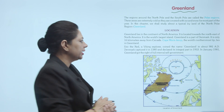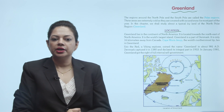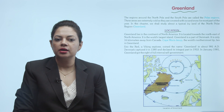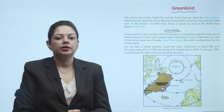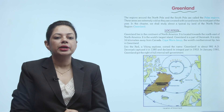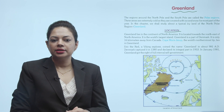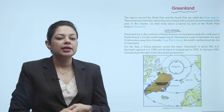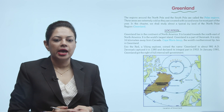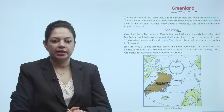What is the location of Greenland? Greenland lies in the continent of North America — it is located toward the northeast of North America. It is the world's largest island. Greenland is a part of Denmark. It is only 16 kilometers away from Canada. Cape Maury's — the world's northernmost tip — lies in Greenland. North America mein located karta hai, world ka largest island hai, and Greenland is a part of Denmark also.